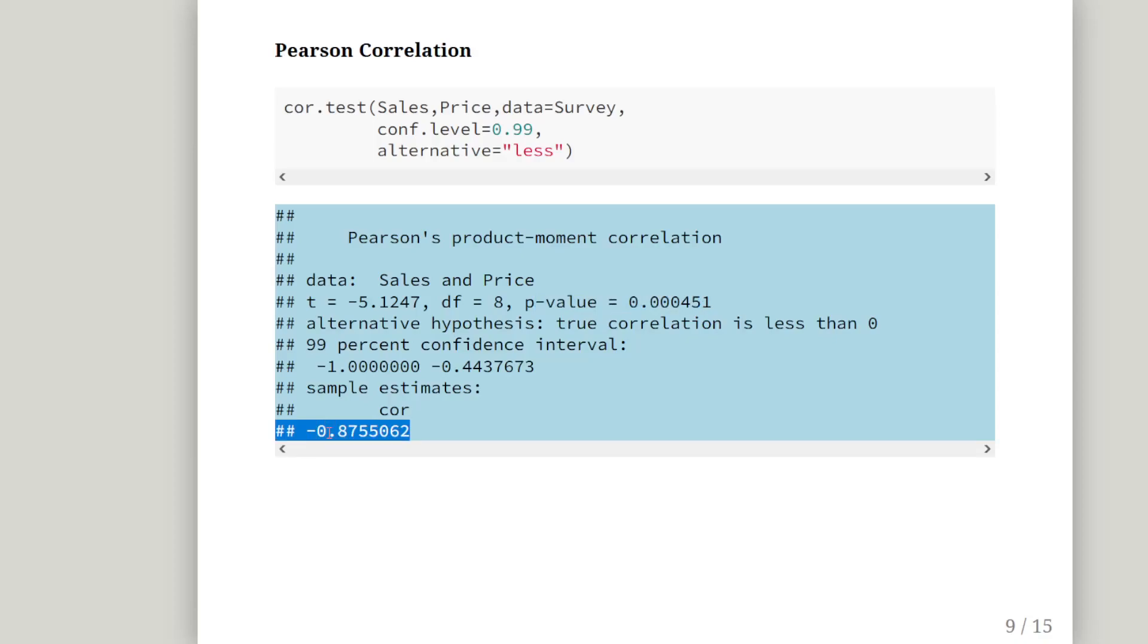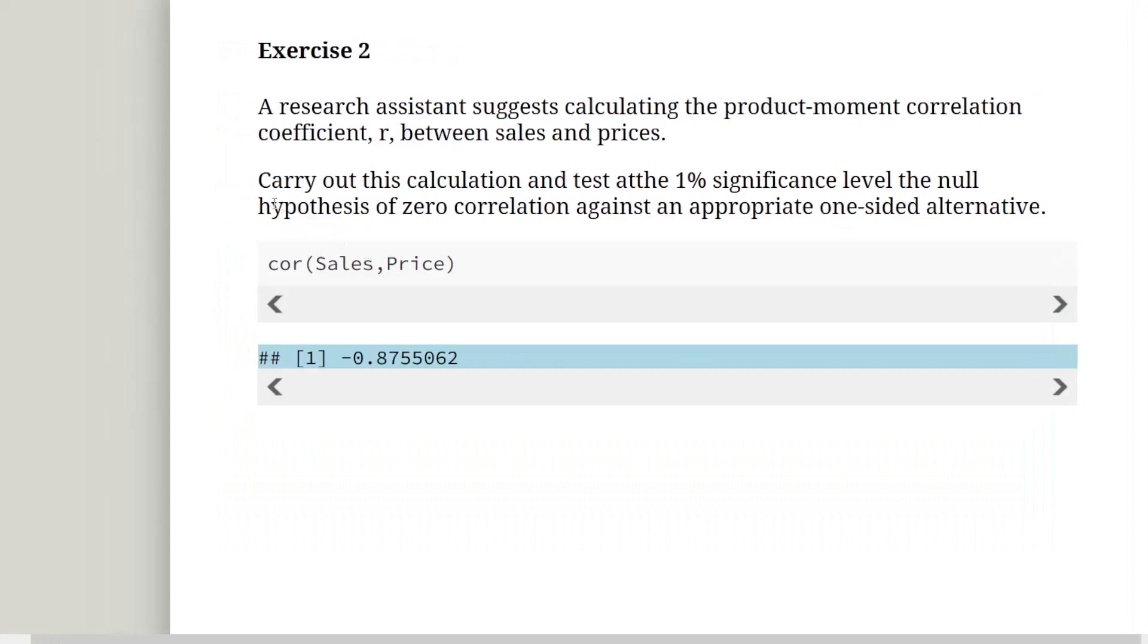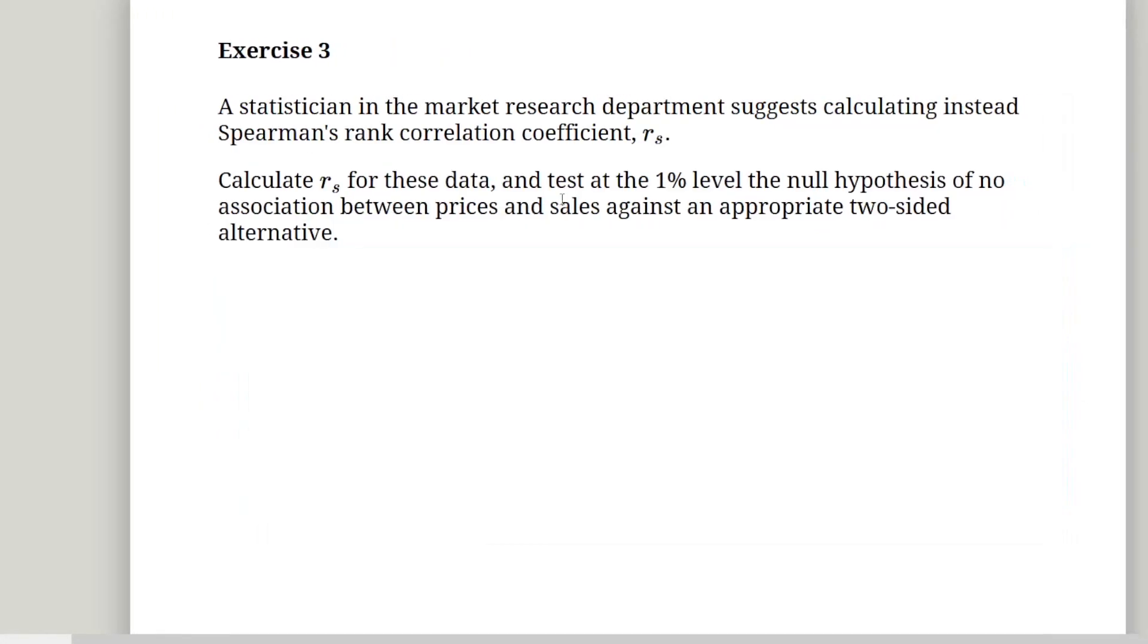So this is exercise three. A statistician in the market research department suggests instead calculating the Spearman's correlation coefficient, RS. So calculate RS for the data and test at the 1% level, the null hypothesis of no association. That's actually important. Remember, previously, the null hypothesis was in terms of 0 correlation previously. Let's just go back there and check that and see what I mean. This is exercise two, 0 correlation. Now it's association. Important difference there.